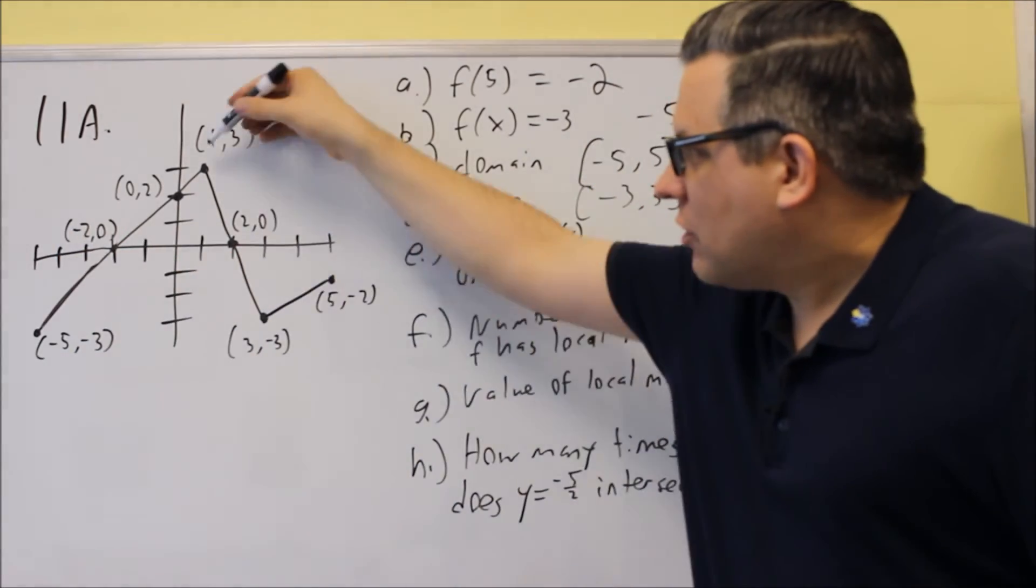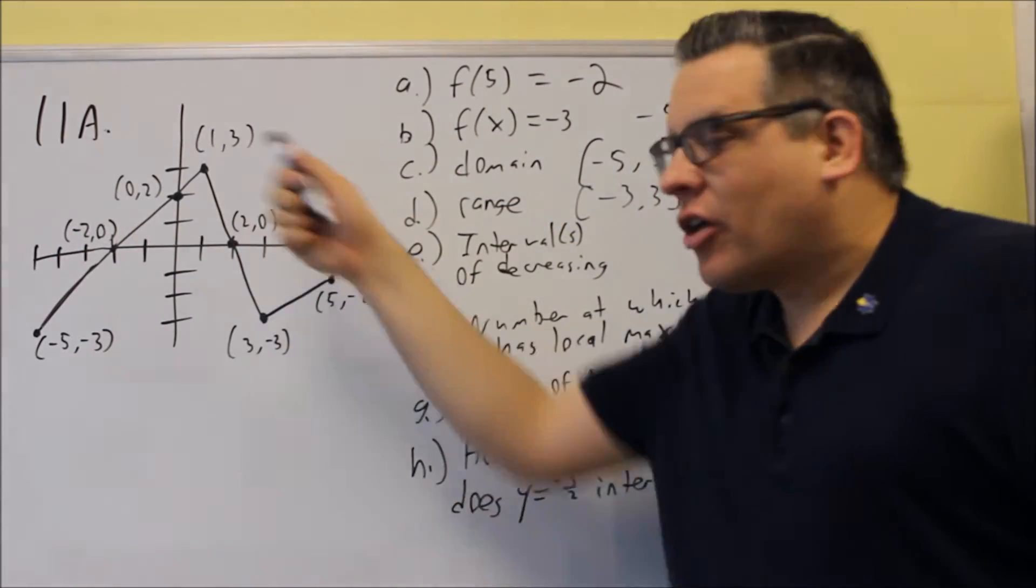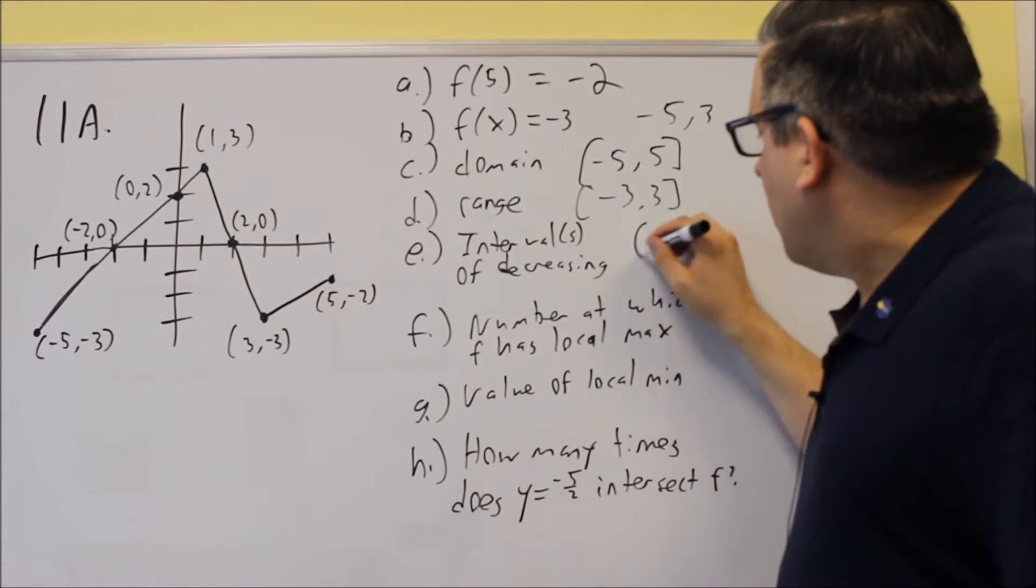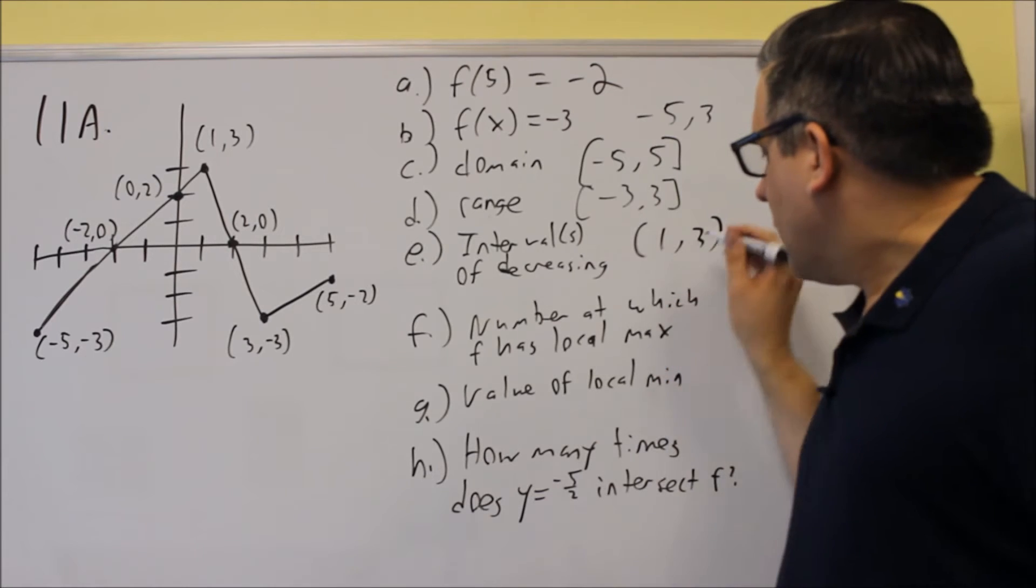So you go from left to right, the graph is falling, and it's falling between the x value of 1 and between the x value of 3. So I'm going to put 1, 3 for my answer.